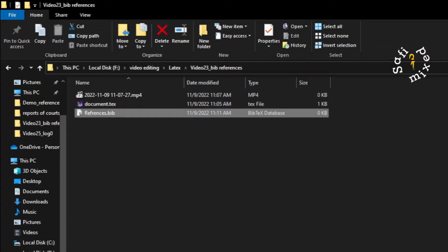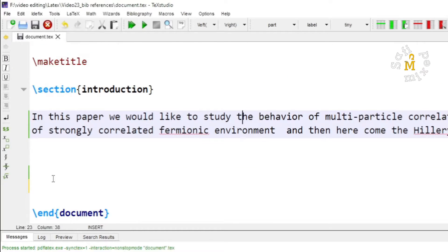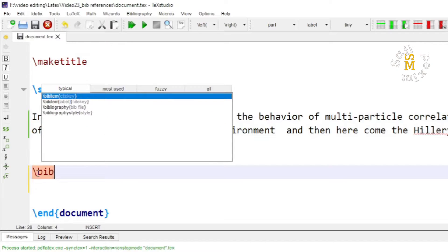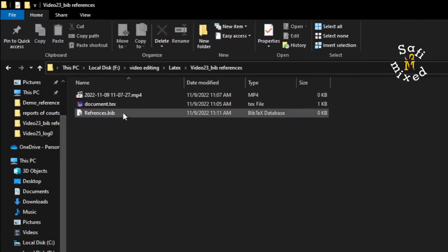Then I come to the document and at the end I add bibliography and add the name of the file. This name inside the argument of command bibliography must exactly match with the name of this file with extension bib.